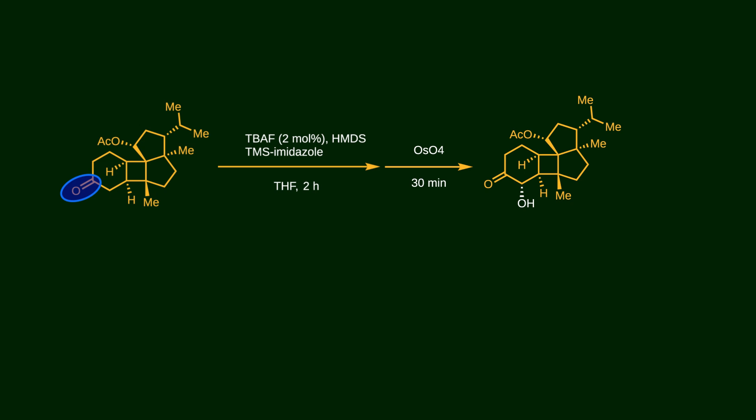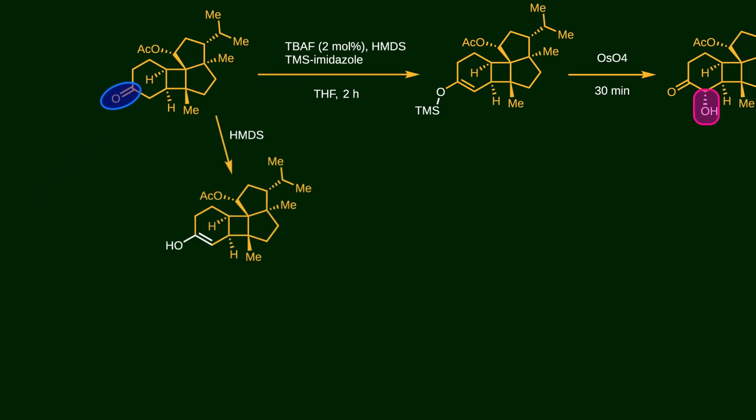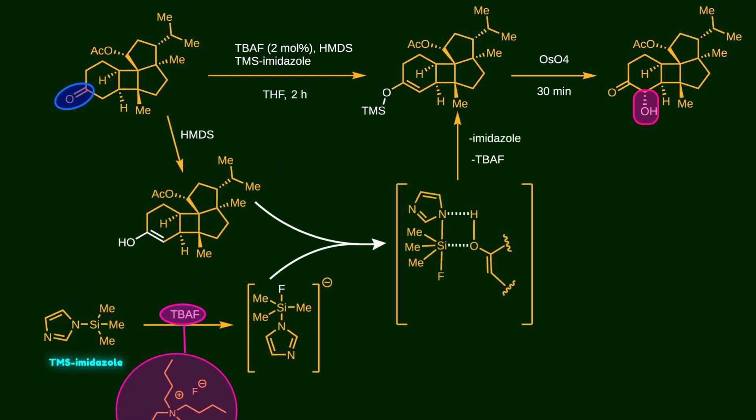The presence of the carbonyl group enables us to install a hydroxy group at its alpha position. To do this, we first need to create a silyl enol ether. The enol is generated using HMDS as a base. At the same time, TBAF as a fluoride source attacks the silicon attached to the imidazole to form a reactive pentavalent silicate. The silicon condenses with the hydroxy group and releases the silyl ether.